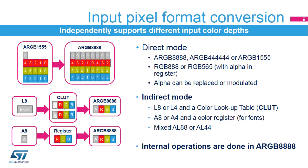For each foreground and background layer, the format can be programmed independently. Direct mode fetches the RGB or ARGB content directly from the memory. Indirect mode uses an intermediate color lookup table to determine the color to be used during the copy or blending operation.